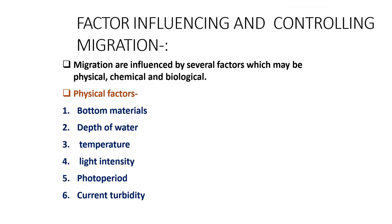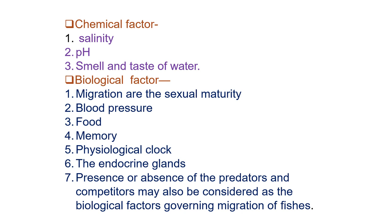Factors influencing and controlling migration: Migrations are influenced by several factors which may be physical, chemical and biological. Physical factors include bottom materials, depth of water, temperature, light intensity, photoperiod and current turbidity. Chemical factors include salinity, pH of water, and smell and taste of water. Biological factors include sexual maturity, blood pressure, food, memory, physiological clock of the animal, endocrine glands, and the presence or absence of predators and competitors.